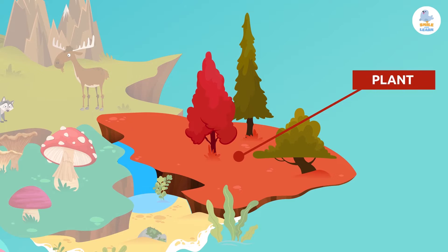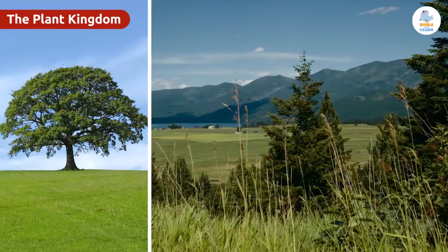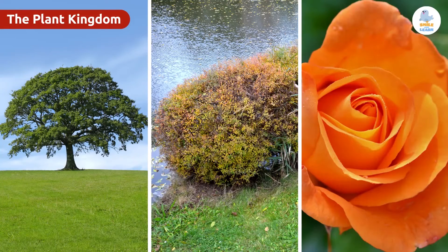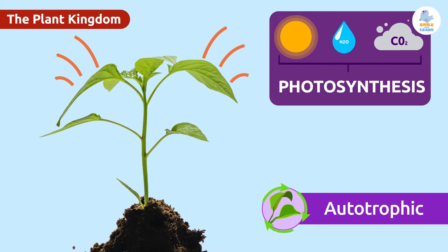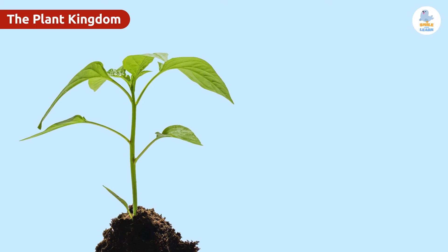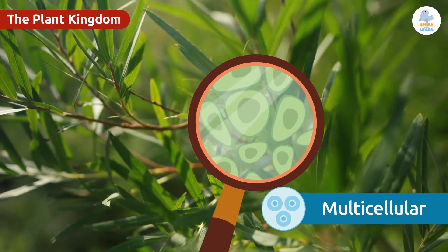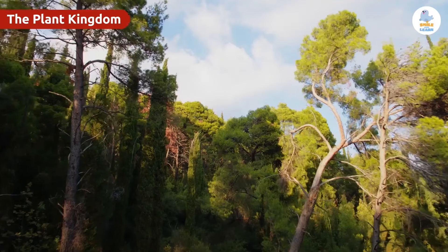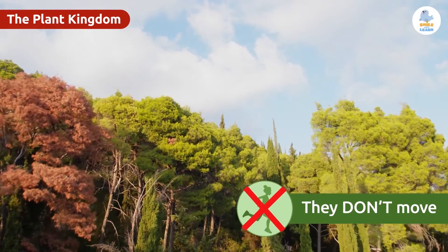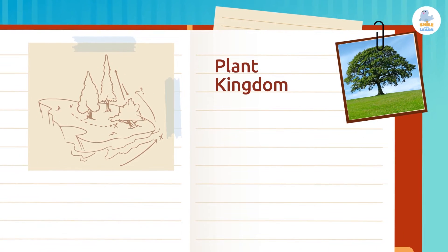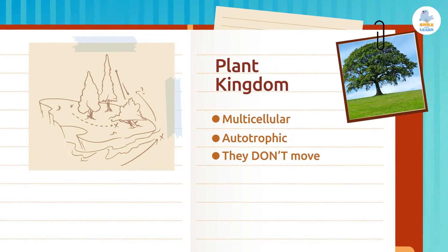The plant kingdom is characterized by the fact that all plants — whether they're trees, bushes, or flowers — are autotrophic, meaning they make their own food through a process called photosynthesis. They're also multicellular, made up of more than one cell. But unlike animals, plants cannot move on their own. So the characteristics of the plant kingdom are: multicellular, autotrophic, and they do not move on their own.